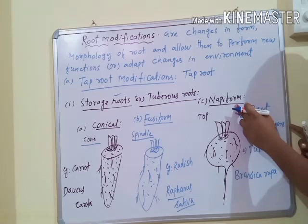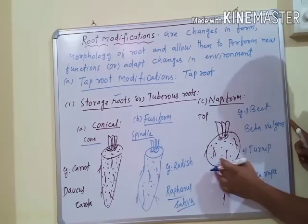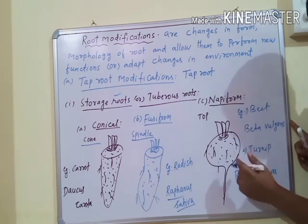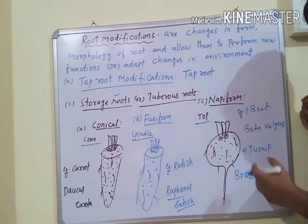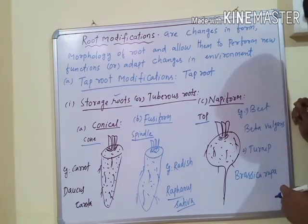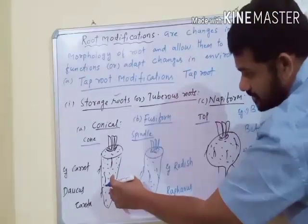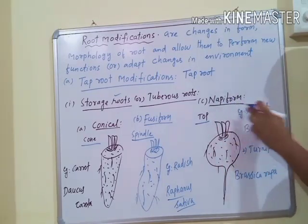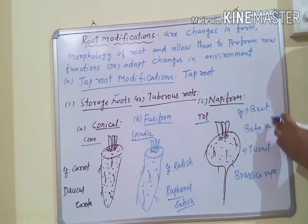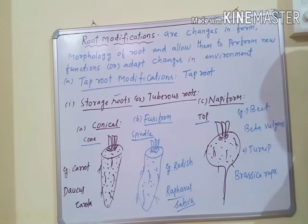Another shape is Napiform. In Napiform Shape, the Primary Root and hypocotyl store food material and become tuberous, giving a top-like shape — almost globular. The secondary roots remain thin and occur over the Primary Root. Examples for Napiform are Beetroot, scientific name Beta vulgaris, and Turnip, scientific name Brassica rapa.